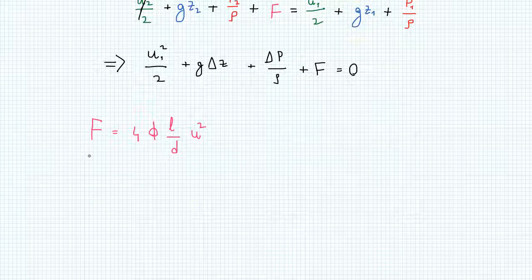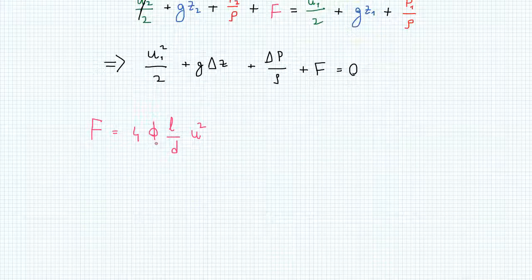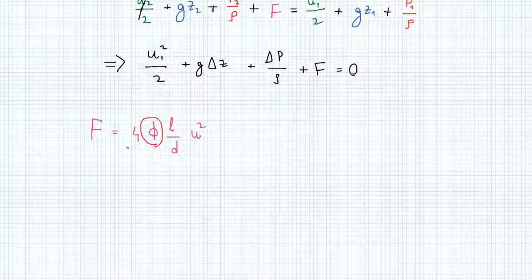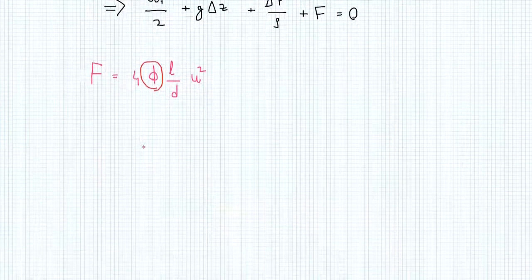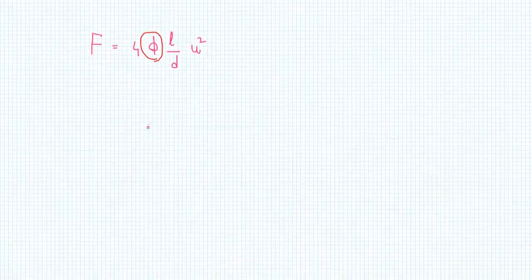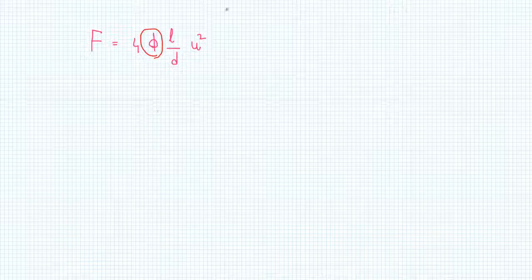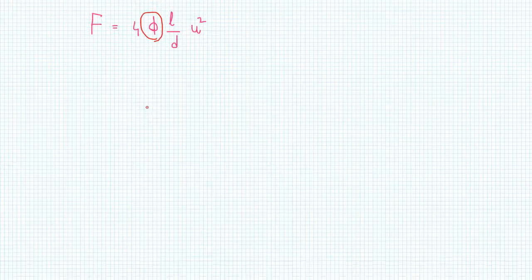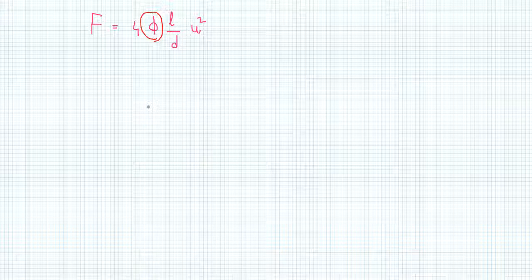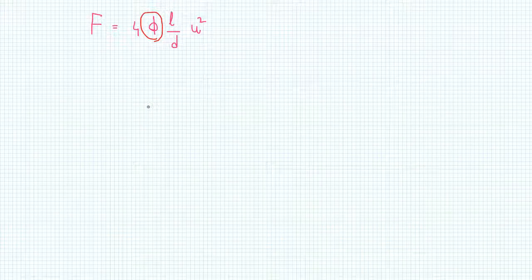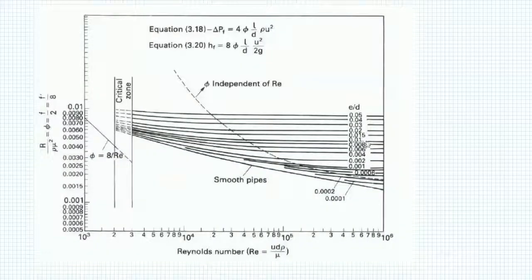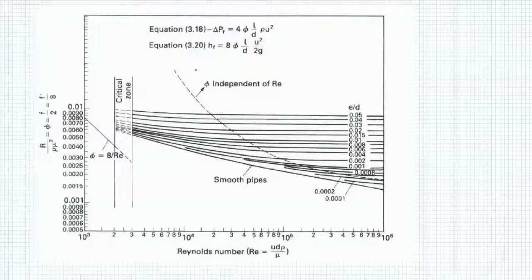Now, phi is a dimensionless group, a function that depends on the roughness of the pipe and the Reynolds number that we're working with. To find phi, we can make use of a friction chart where multiple curves corresponding to different relative roughnesses are plotted correlating phi with the Reynolds number. Here is a friction chart. This might look a bit intimidating at first, but if we know what we're looking for, we can actually navigate ourselves quite easily.